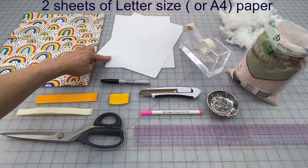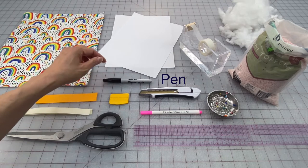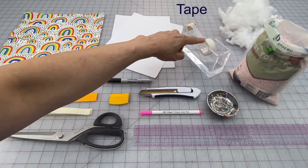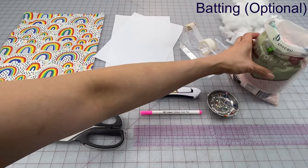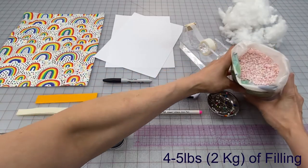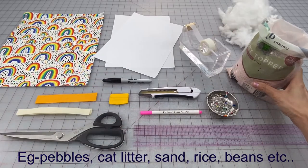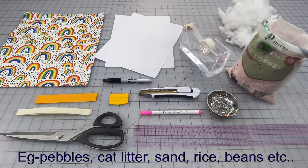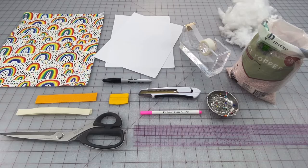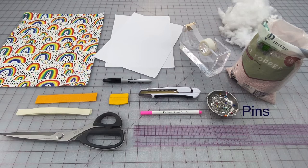You'll also need two sheets of letter-sized paper, a pen or a marker, some tape, a couple of handfuls of batting (that's optional), and for the filler I've got about four and a half pounds of small pebbles. You could use cat litter or wash sand, you could also use rice or beans, but just keep in mind that might attract bugs, and lastly just a couple of pins.